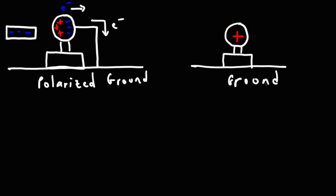This is another example of charging by induction. We took a neutral metal sphere and put a positive charge on it using a negatively charged metal rod, even though the rod did not make any contact with the sphere. Charging by induction is using one charged object to induce a charge on another object without making any contact.